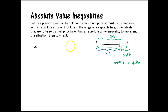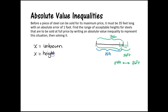Your variables are always your unknown, so you want to make it specific to this problem. What are we looking for? If we read through the problem again, we notice that we're trying to find the range of acceptable heights for steel. You could use H for height as well. Let's make X the height of the steel bar — that's our unknown, that's what we don't know. Always ask: what am I trying to find in this problem? They're asking you to find the range of acceptable heights.